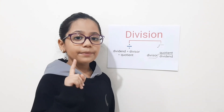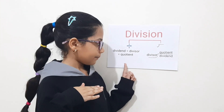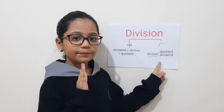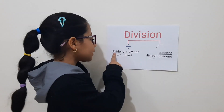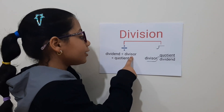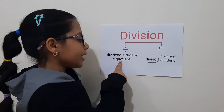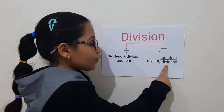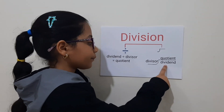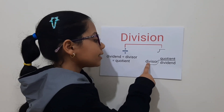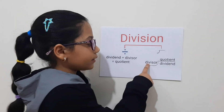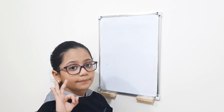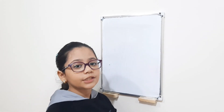The first shape is the horizontal shape, and the second shape is the vertical shape. Here is the dividend. Here is the divisor. And here is the quotient. In the vertical shape, we put the dividend down, the divisor is next to the dividend, and the quotient is up. We have three steps to make our answers easier.